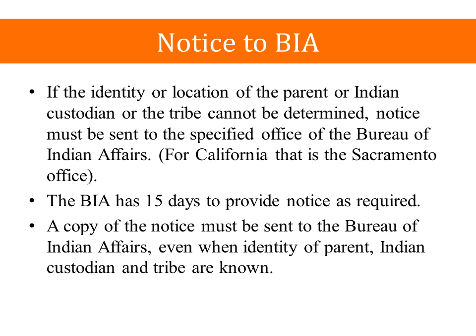If the identity or location of the parent, Indian custodian, or tribe cannot be determined, notice is supposed to go to the BIA — the Bureau of Indian Affairs — under current California law. This is somewhat in flux under the new BIA guidelines, and we are waiting to see what happens with the regulations. So as of early June 2016, if the identity or location cannot be determined, notice should go to the BIA.